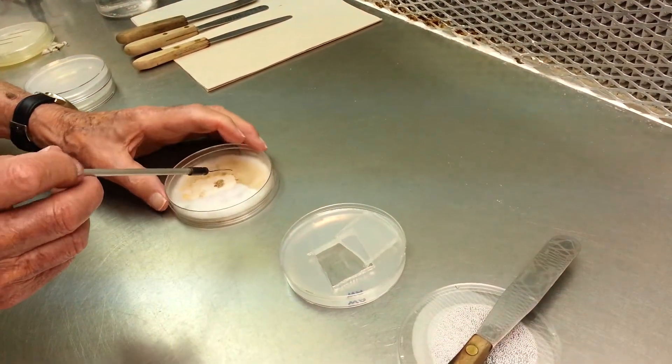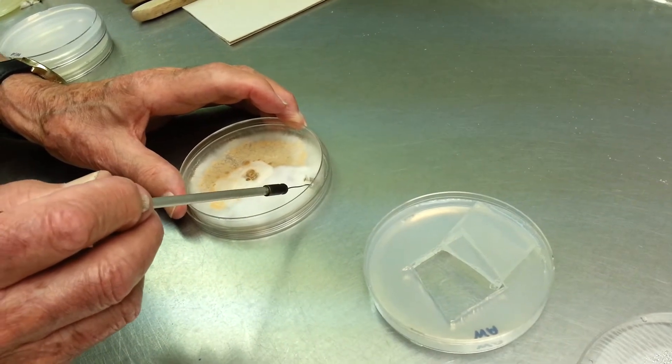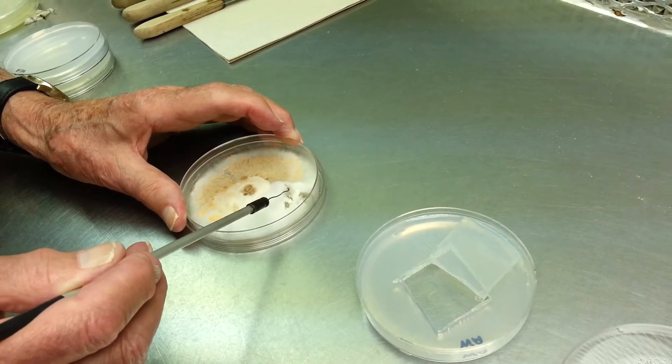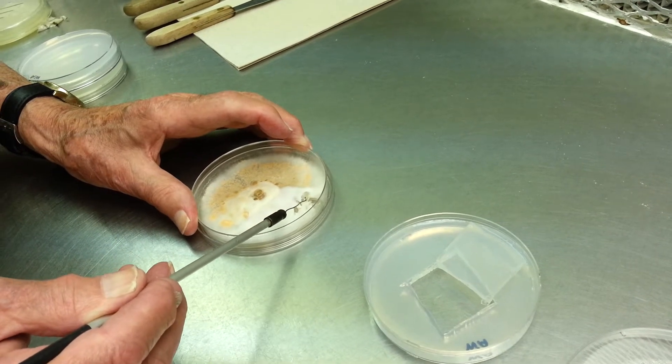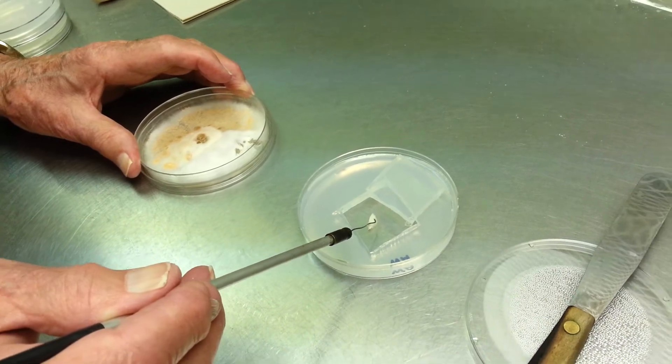Take a piece of the contaminated culture, a very small piece. Put it at the bottom of the plate. It doesn't matter the size? No, just a small size.